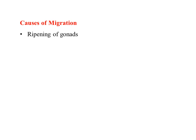The causes which induce migration: the first one is the ripening of the gonads. When the gonads become mature, it will induce the birds to migrate, so the ripening of the gonads is one cause of migration. The next one is instinct — their inherent ability, their instinct, will induce the birds to migrate from the feeding ground to the breeding ground and vice versa.